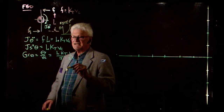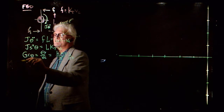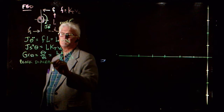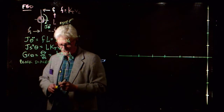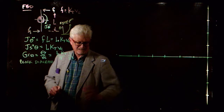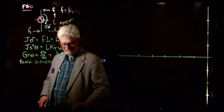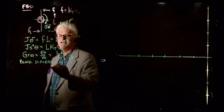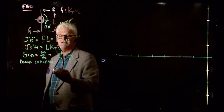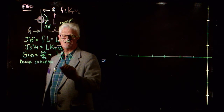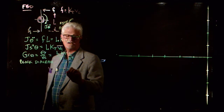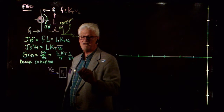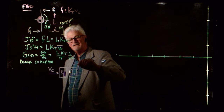Let's draw a block diagram for this system. Almost always when you're drawing block diagrams you want to start with the input. Here V_C comes in. When I get the voltage I'm going to multiply times a thrust constant K_T, then multiply times the lever arm L, and that gives me the moment torque.